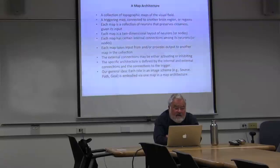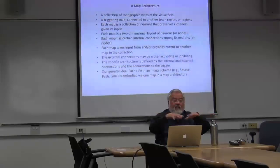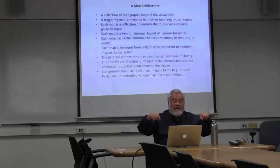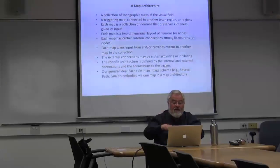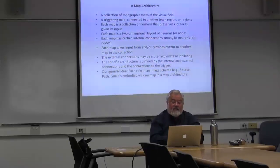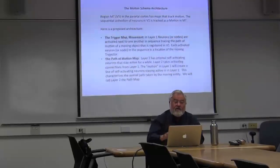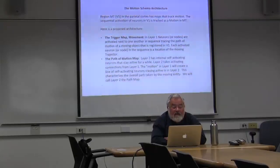In a map architecture, there's a collection of maps: a triggering map connected to other brain regions. Each map preserves closeness of its input — in the auditory cortex, it's closeness of intensity and frequency, giving a frequency-intensity map from topographic maps of the inner ear. Each map is a two-dimensional layout of neural ensembles with internal connections, and external connections to other maps that can be activating or inhibiting. The key idea: each role in an image schema — like source, path, and goal — is embodied via one map in a map architecture.